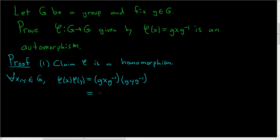So g⁻¹ times g is the identity, so we get gx, e, y, g⁻¹. And x times the identity is simply x, so this is g, x, y, g⁻¹.